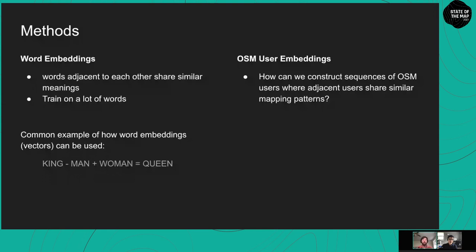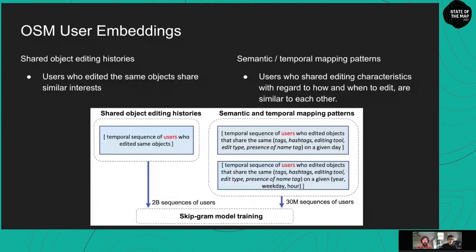We do this in one of two ways. First, for every object in OSM we construct a sequence of users who have touched that object — users who edit the same object might share similar interests. Second, we can create sequences from semantic and temporal mapping patterns, grouping mappers who map in similar ways at similar times or with similar recurring daily patterns — for example, users who add new buildings to the map at 10 a.m. on Tuesday mornings.